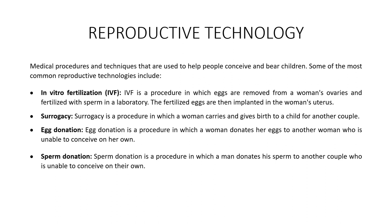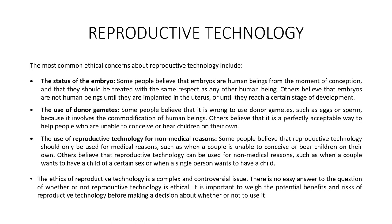Last is reproductive technology — medical procedures and techniques used to help people conceive and bear children. The most common include IVF (in vitro fertilization), a procedure where eggs are removed from a woman's ovaries and fertilized with sperm in a laboratory, and the fertilized eggs are then implanted in the woman's uterus. Surrogacy is a procedure in which a woman carries and gives birth to a child for another couple. Egg donation is a procedure in which a woman donates her eggs to another woman who is unable to conceive on her own. Sperm donation is a procedure in which a man donates his sperm to another couple unable to conceive. The most common ethical concerns include the status of the embryo — some people believe embryos are human beings from the moment of conception and should be treated with the same respect as any other human being, while others believe embryos are not human beings unless implanted in the uterus or until they reach a certain stage of development.